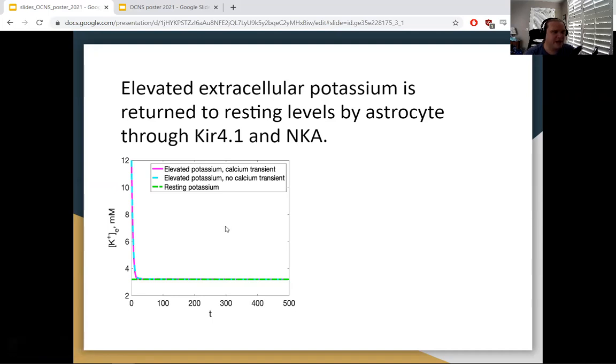So in blue and pink here, we see that the astrocyte is clearing that elevated potassium and returning it to the baseline in green. And there's not much difference between the two conditions, calcium and no calcium transient.